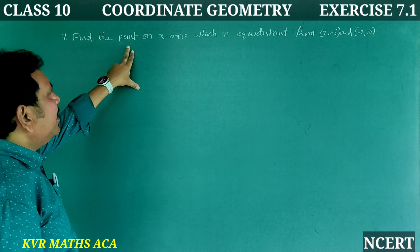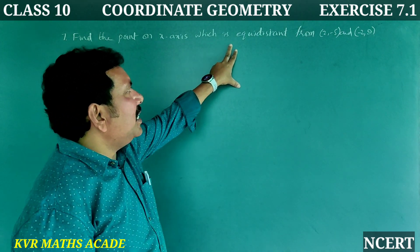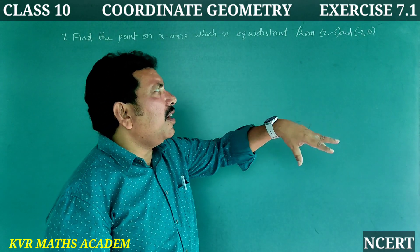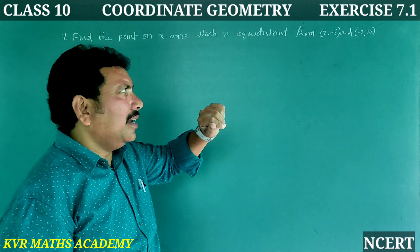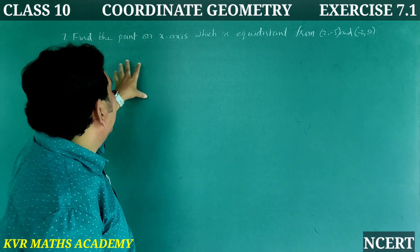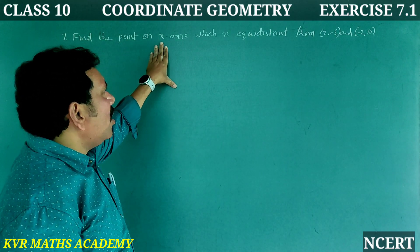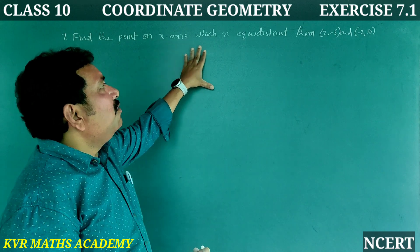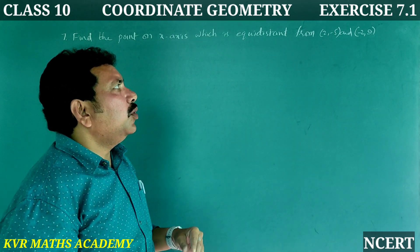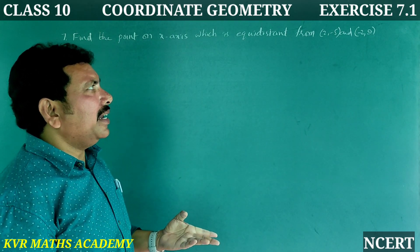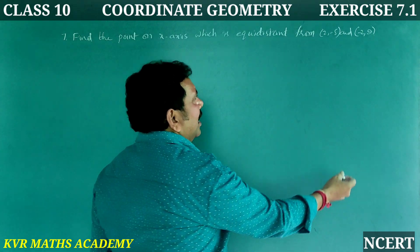7th question: Find the point on the x-axis which is equidistant from (2, −5) and (−2, −9).